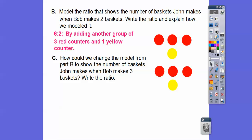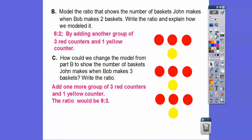So how could we change the model from part B — six to two — to show the number of baskets John makes when Bob makes three baskets? Here are two baskets for Bob. We add another three to one ratio, so now Bob has three baskets. By adding one more group of three red and one yellow, the ratio becomes nine to three: nine reds and three yellows.